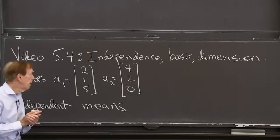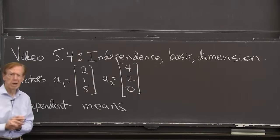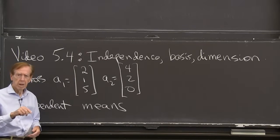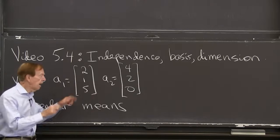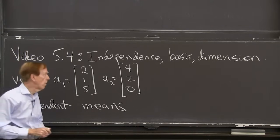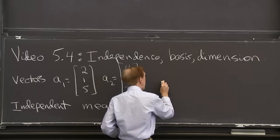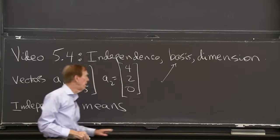Are those vectors independent? Well, if I draw them in three-dimensional space, I can imagine 2,1,5 going in some direction. Let me draw it. How's that? 2,1,5, whatever. Goes there. That's a1.